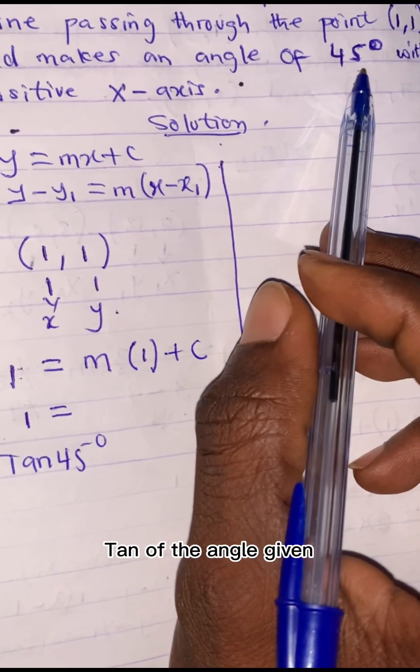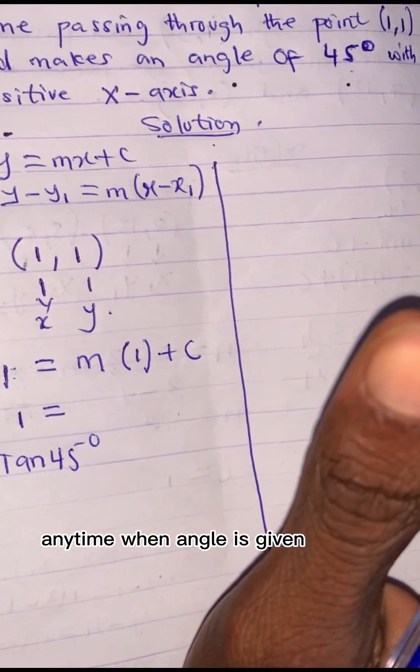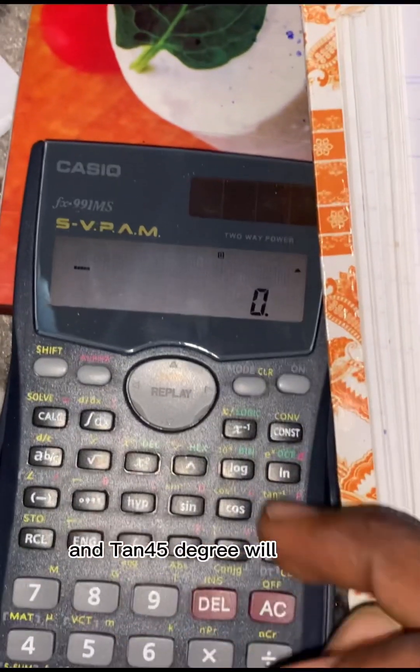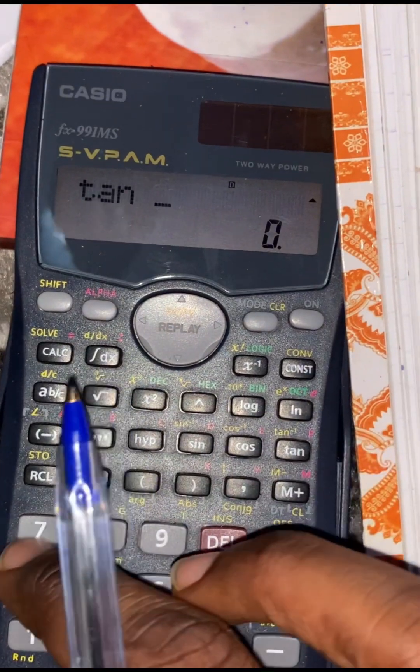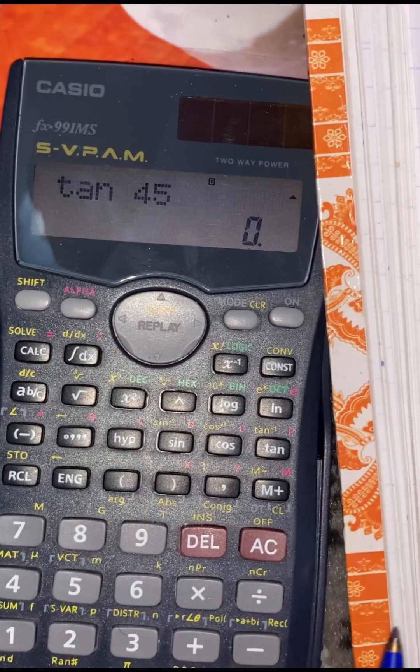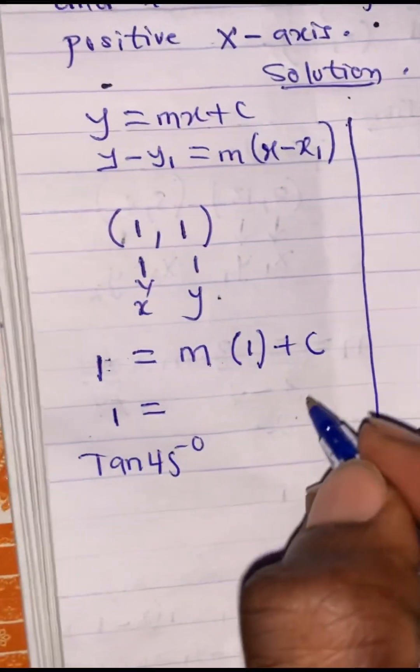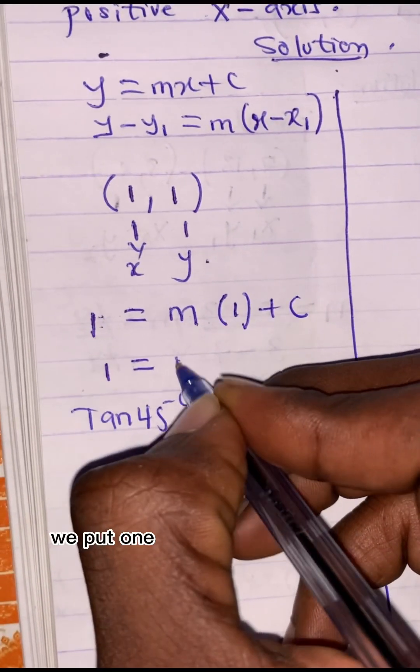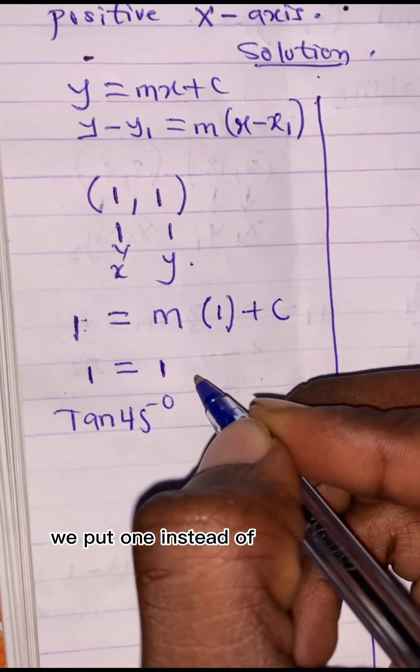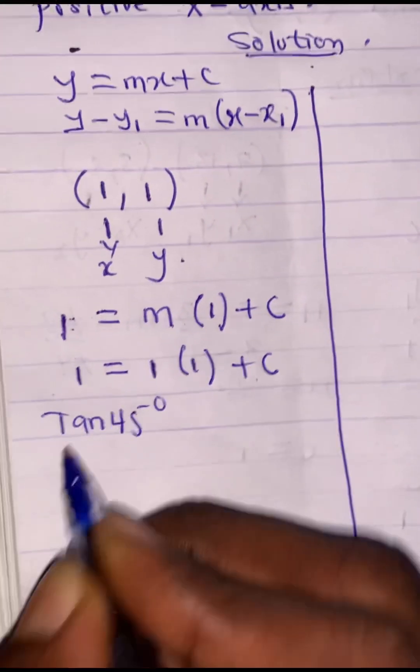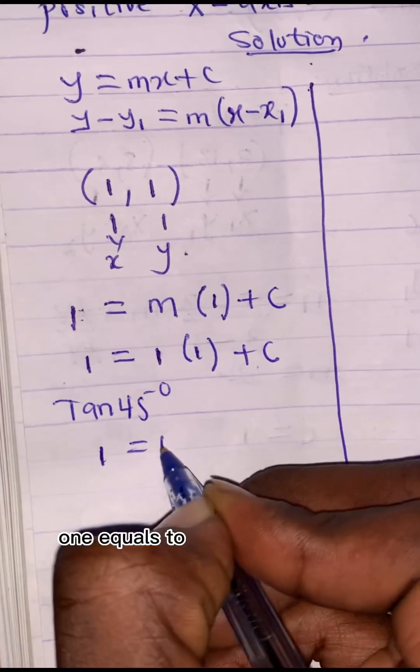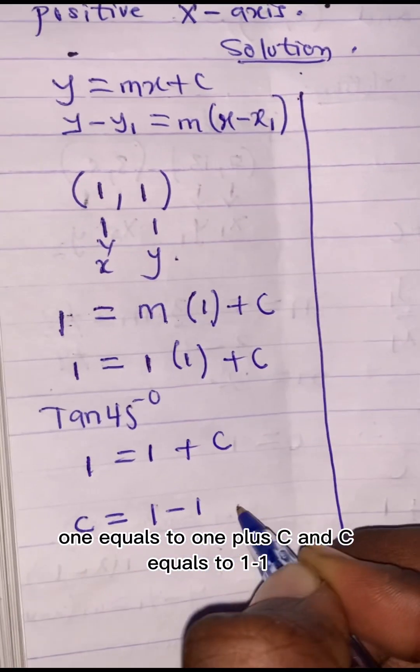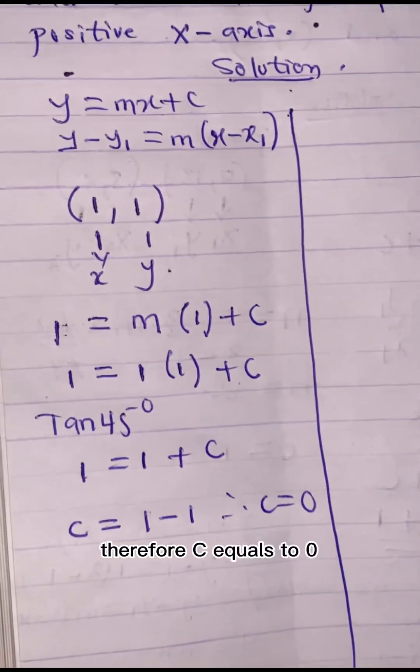1 equals to m is nothing but tan 45 degrees. Tan of the angle given. Anytime when angle is given, we use tan of that value. And tan 45 degrees will give us 1. So instead of tan 45 degrees, we put 1 instead of m into 1 plus c. 1 equals to 1 plus c, and c equals to 1 minus 1. Therefore, c equals to 0.